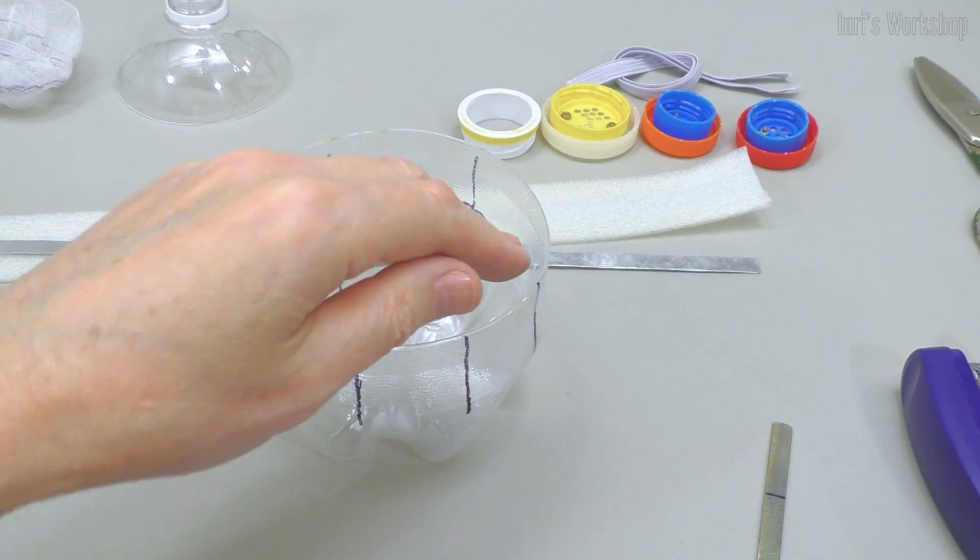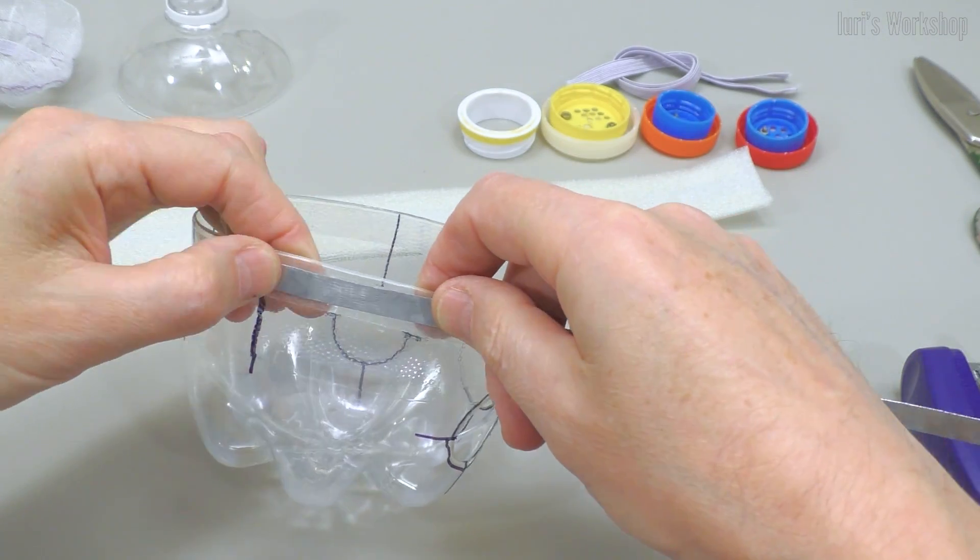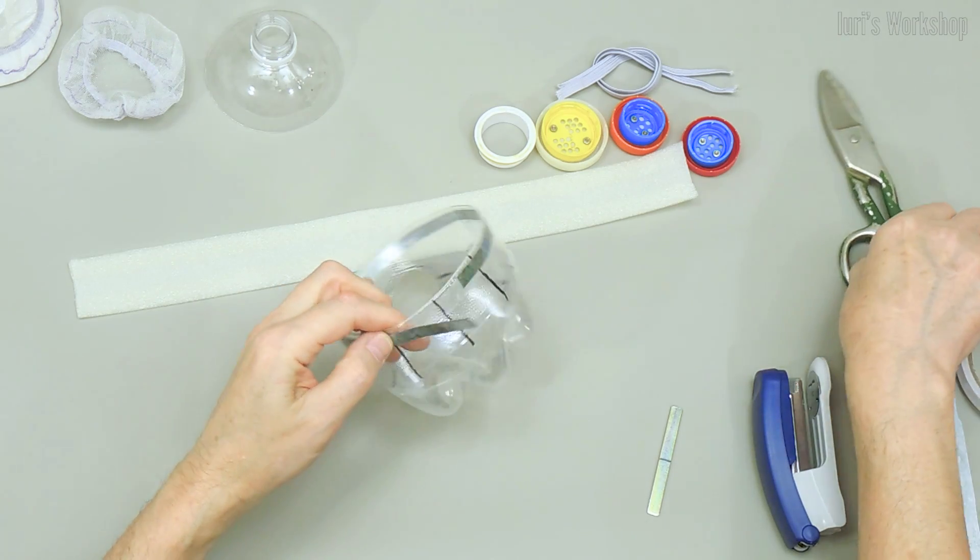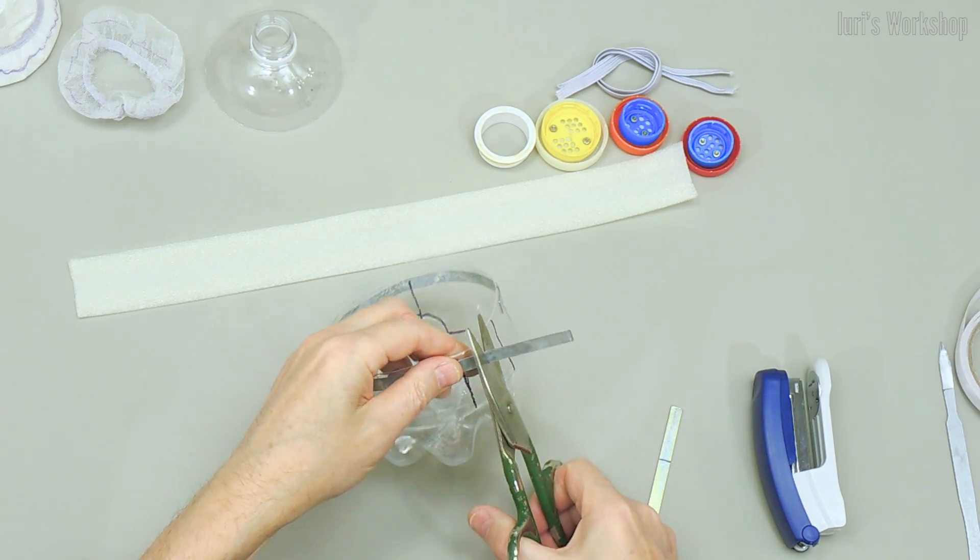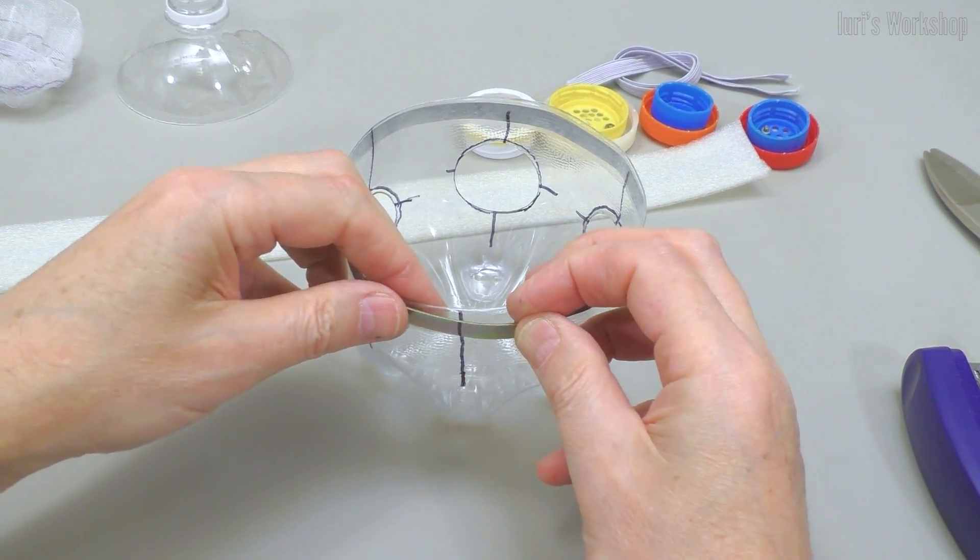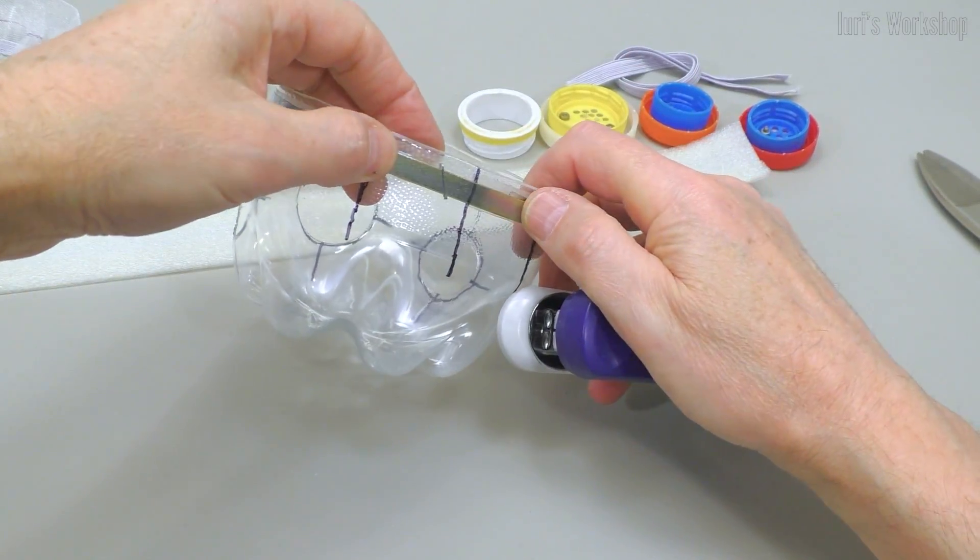The edge of the mask is reinforced with a steel plate half a mm thick and 8 mm wide. This plate allows you to adjust the shape of the mask for the best fit to the face. A 1 mm thick and 8 mm wide plate forms the edge of the mask adjacent to the nose.